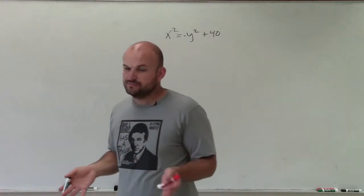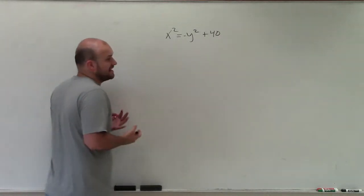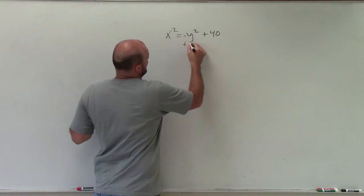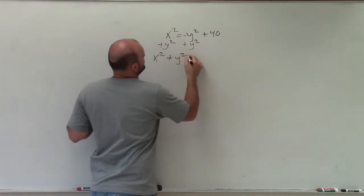And what I automatically notice about this equation is that it's not in standard form. I don't have the x and the y's on the same side. So when graphing ellipse, that's the main important thing we want to have. So to do that, I'll add y squared to both sides. Then I have x squared plus y squared equals 40.